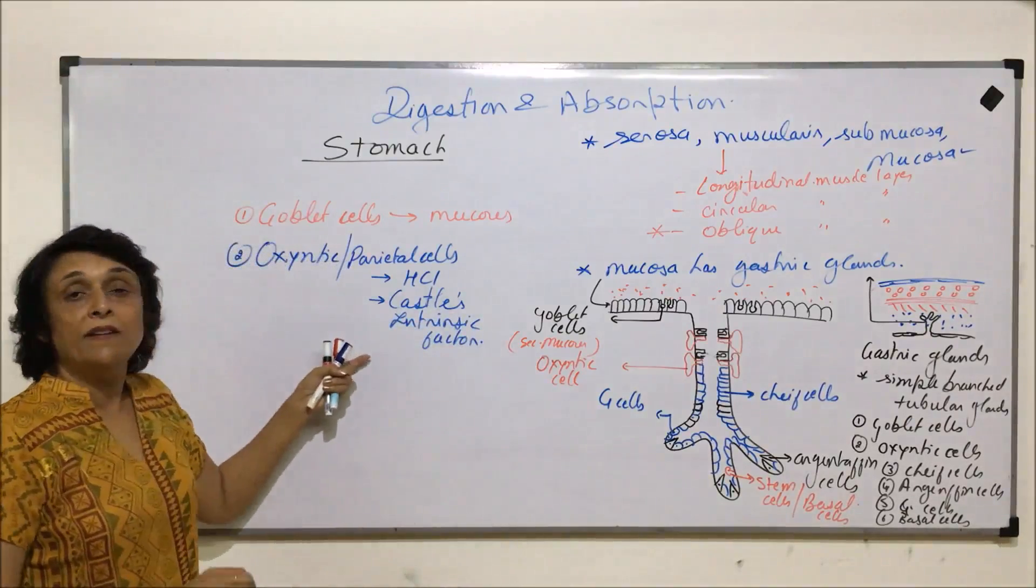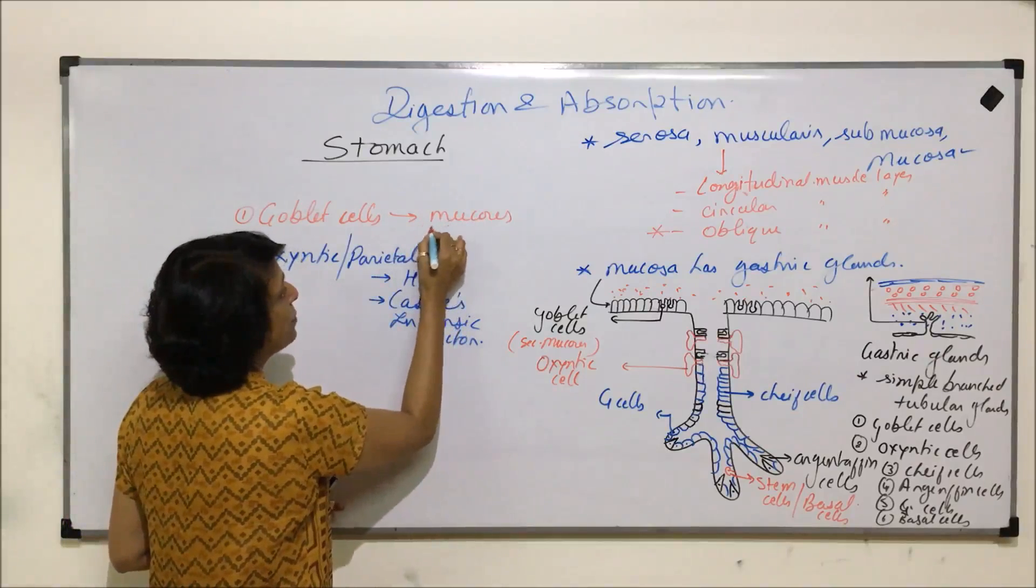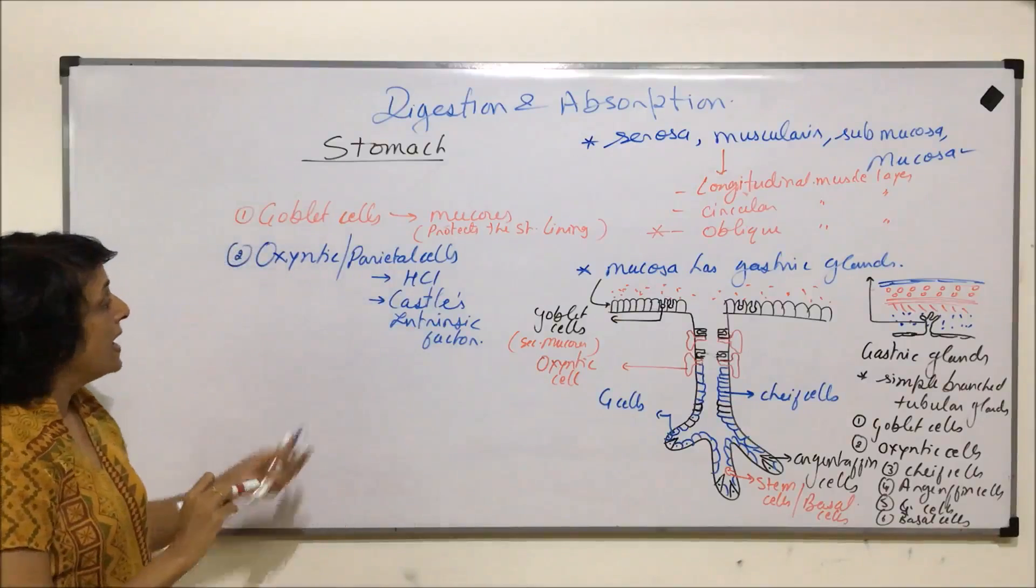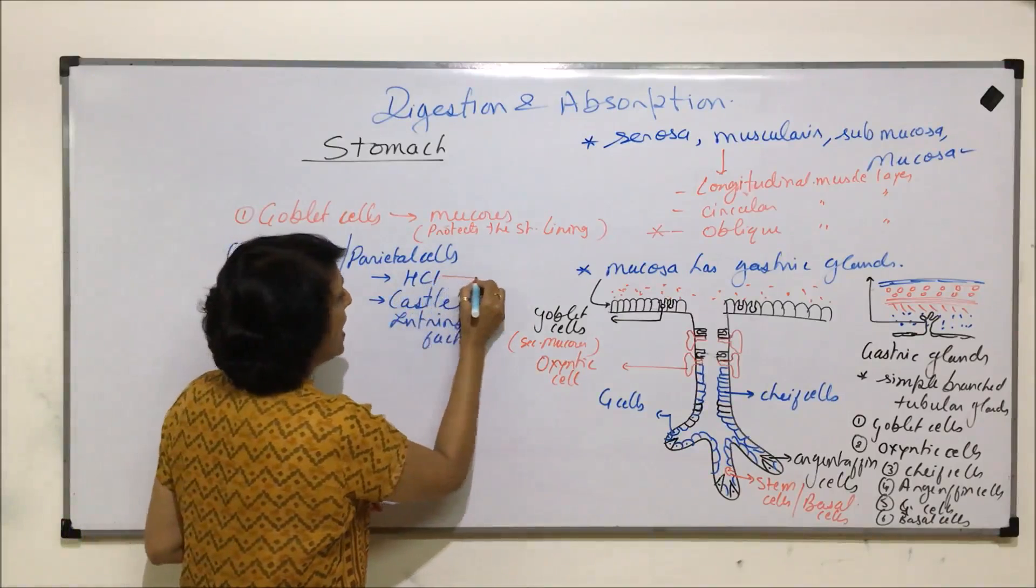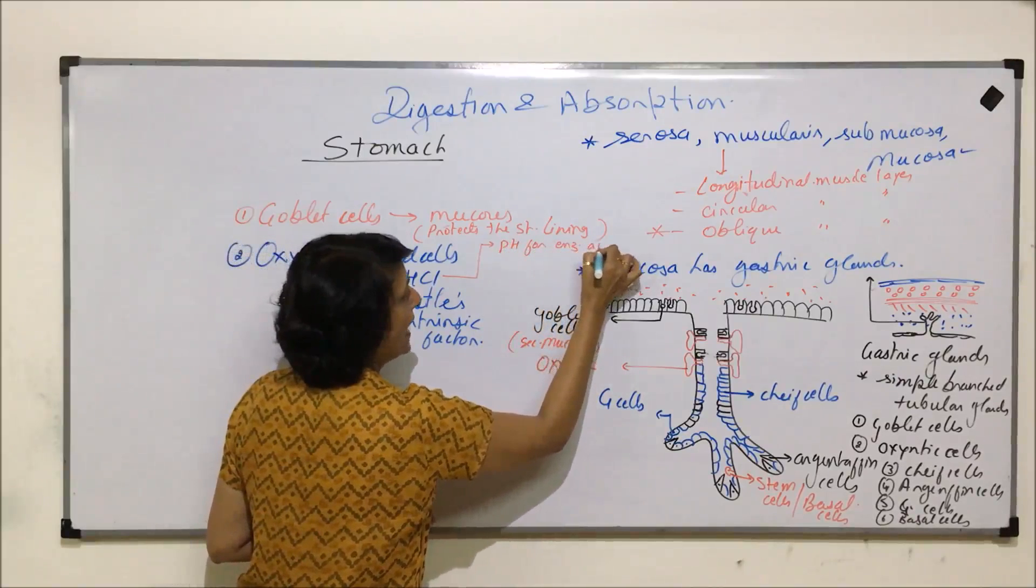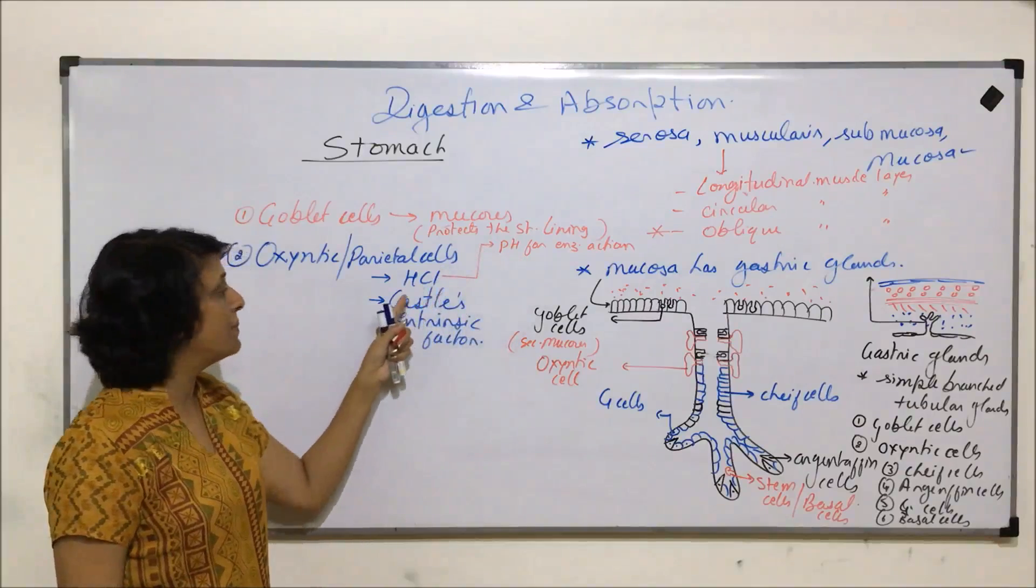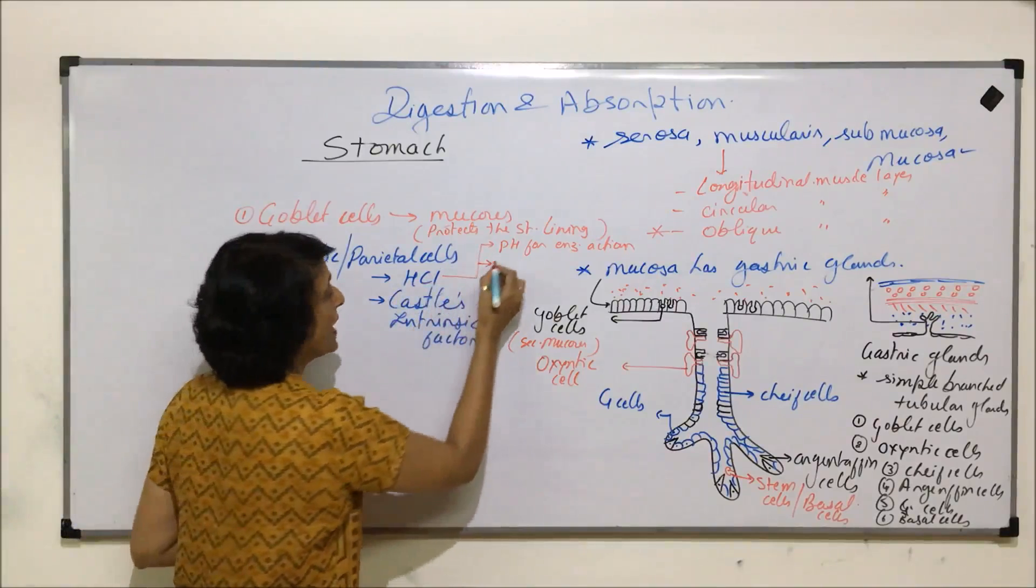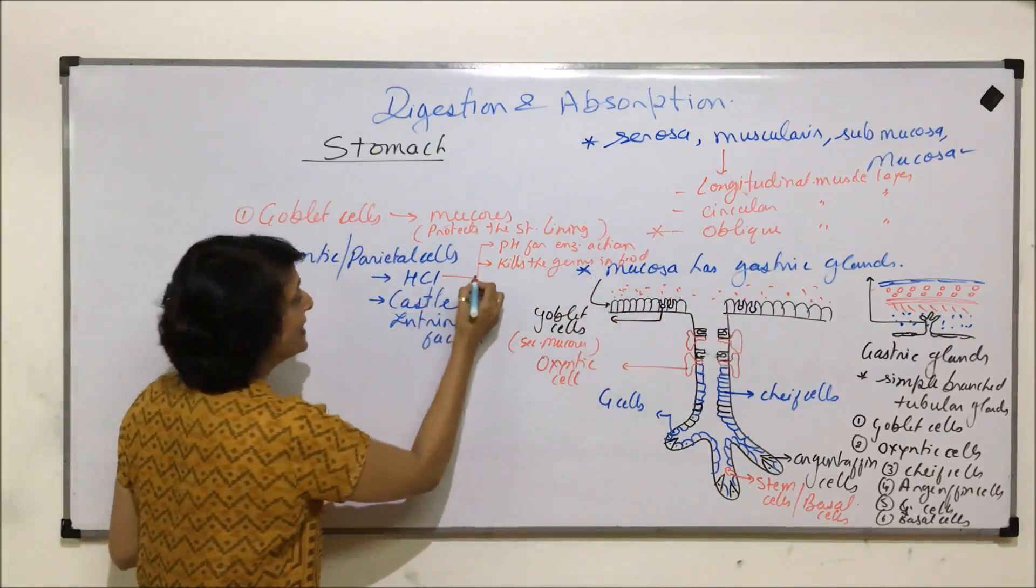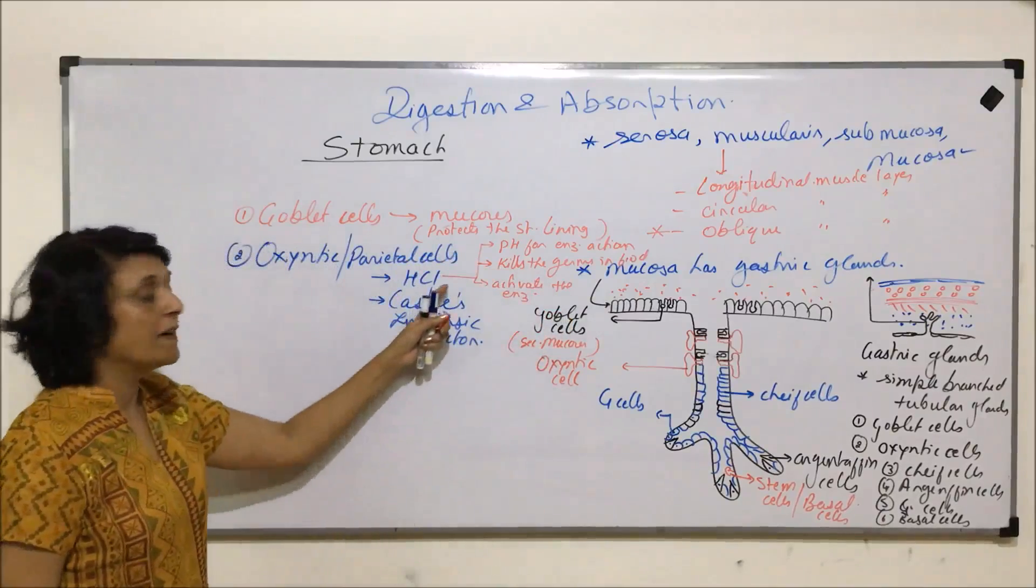We need to understand the functions of all these parts. Mucus protects the stomach lining from hydrochloric acid. Coming to hydrochloric acid, it has many functions. Hydrochloric acid provides pH for enzyme action. For the enzymes to act, the proper pH would be provided by hydrochloric acid. Hydrochloric acid kills the germs in food and it is also going to activate the enzymes.